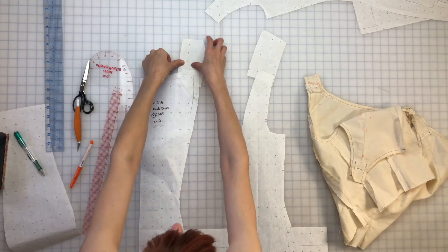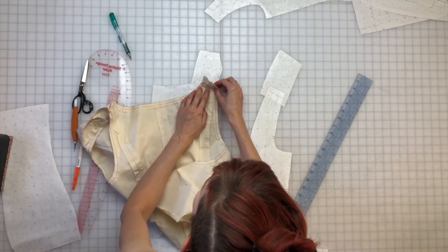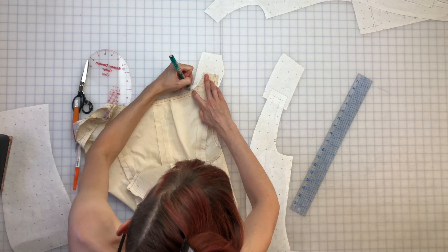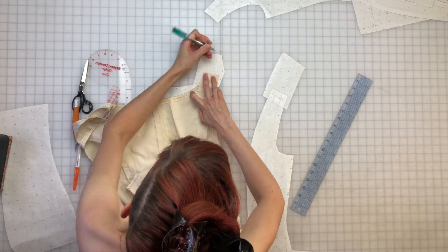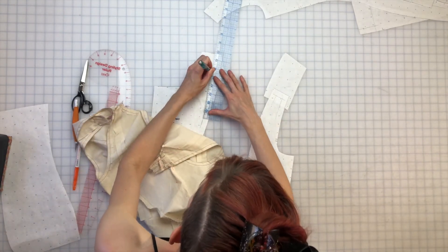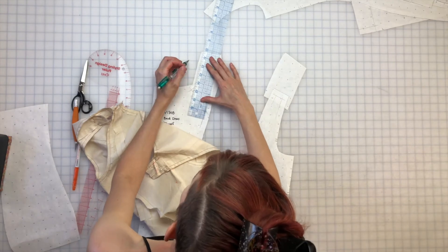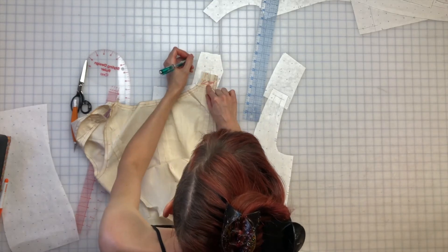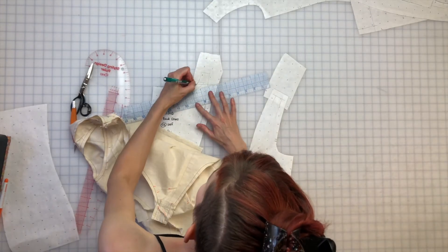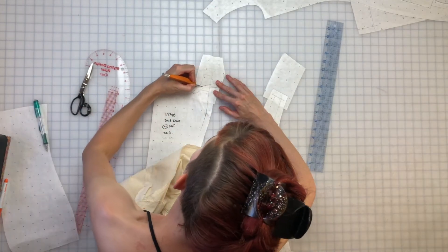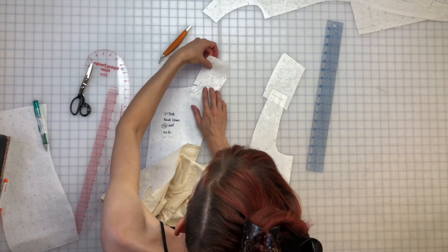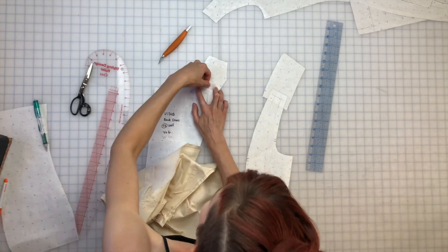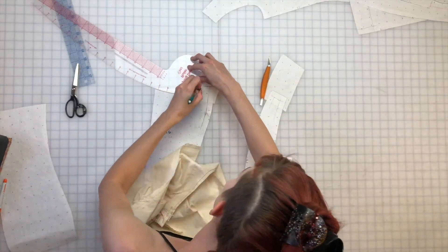I lined up the original shoulder seam that I marked on the fit sample and drew the rectangle extension. True the lines, which means to draw them with straight edges, and measure to make sure it's still the correct size. I'm marking the bubble in the twist that I had pinned and slashing the pattern to reduce that amount. Then add seam allowance and blend into the original pattern piece.